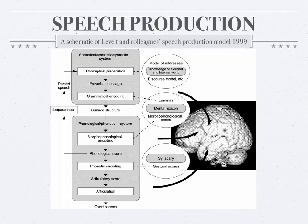As you can see in this schema, at the abstract level there is what is referred to as the rhetorical-semantic-syntactic system, conceptual preparation, the preverbal message, and then grammatical encoding. Here comes the role of the lemma and the mental lexicon, which tries to reformulate those abstract concepts into more concrete ones.